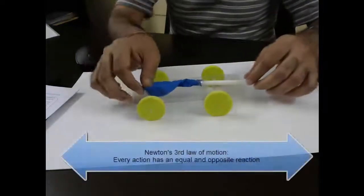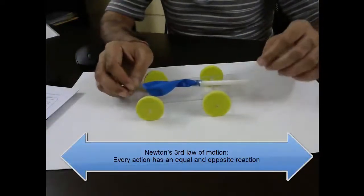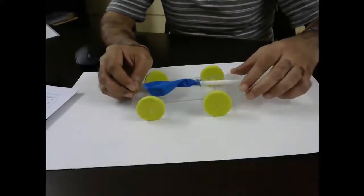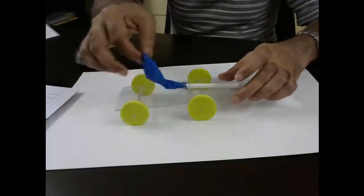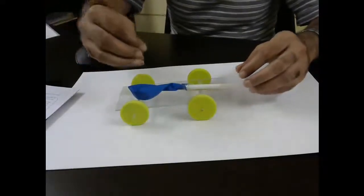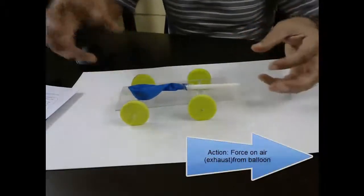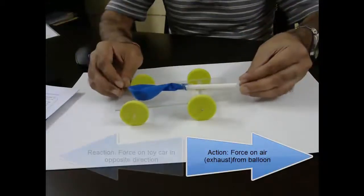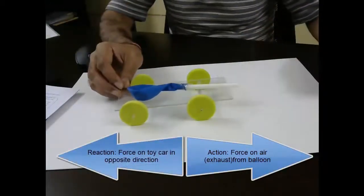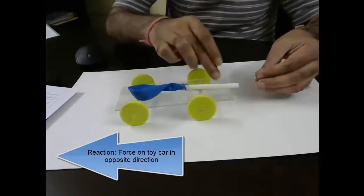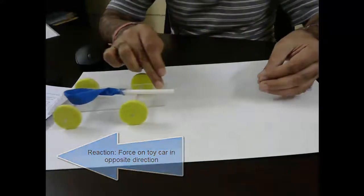The third law says that for every action there is an equal and opposite reaction. Now see when this balloon was blown and the air was coming out from the pressure, it came out from here and from the straw. Now because of that force by which the air was coming out from here, there was an opposite force on this toy car and that is why the car was moving in this direction.